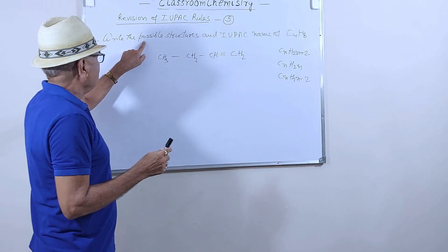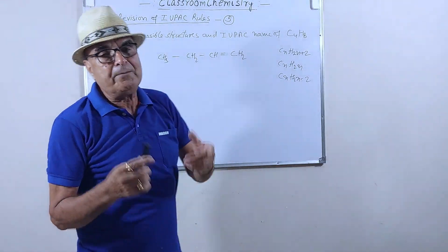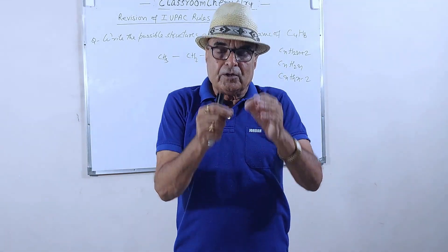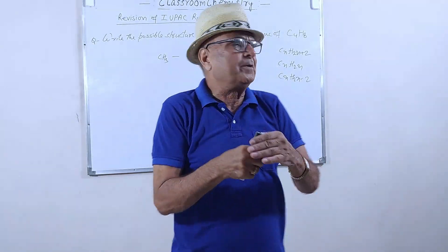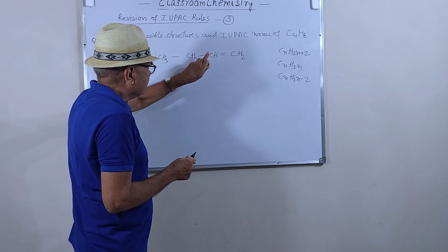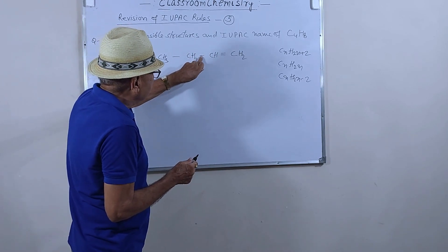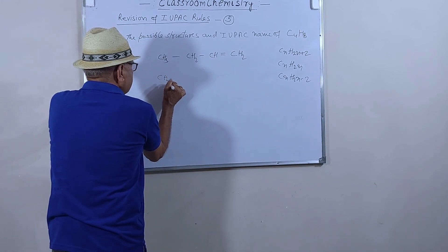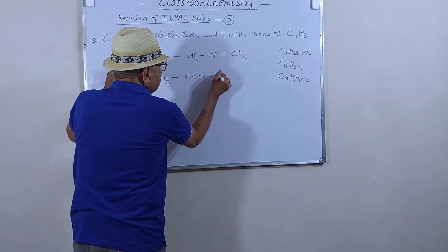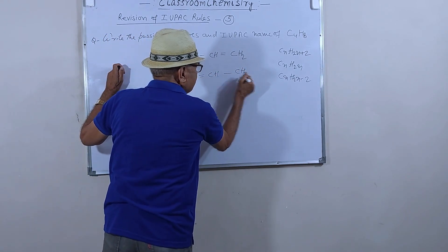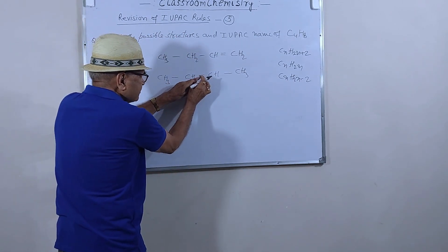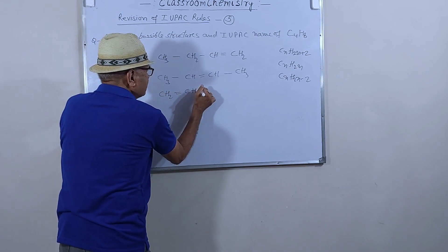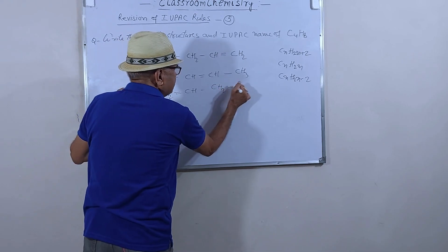I have written the possible structures. You can place the double bond between any two carbons. If you place the double bond between carbon 2 and 3, the second structure is: CH3-CH=CH-CH3. You can also write a third structure by branching: CH3-C(=CH2)-CH3, where there is a double bond with a methyl branch.